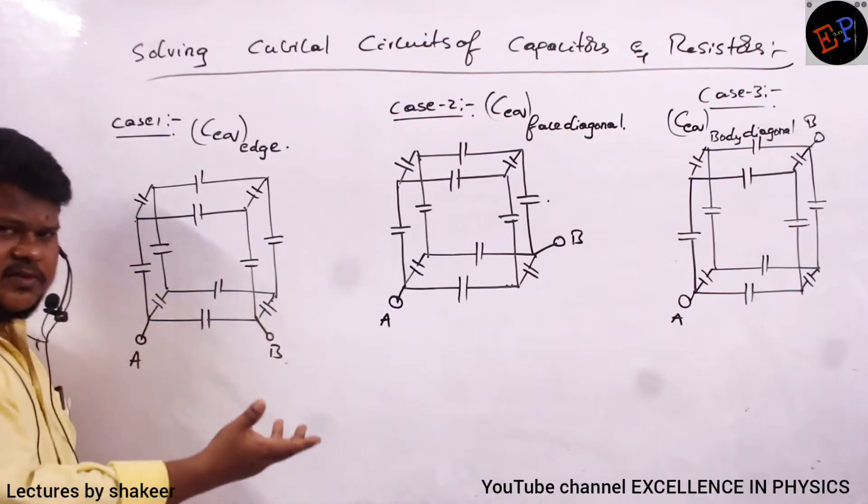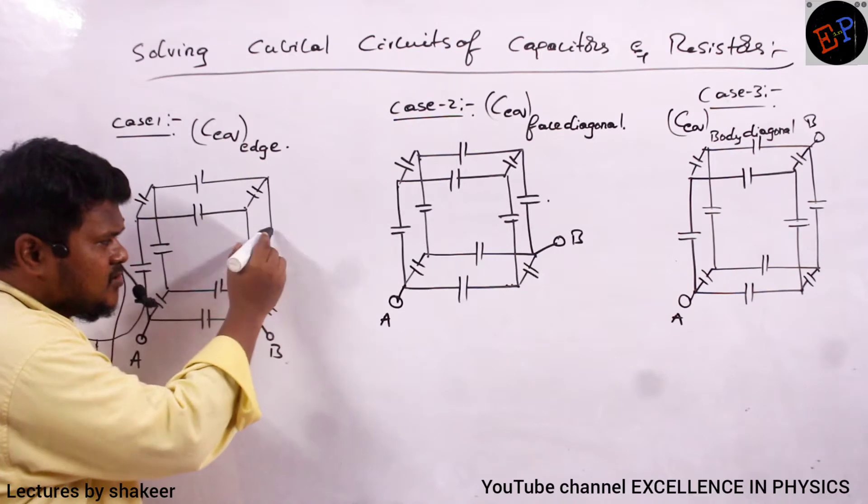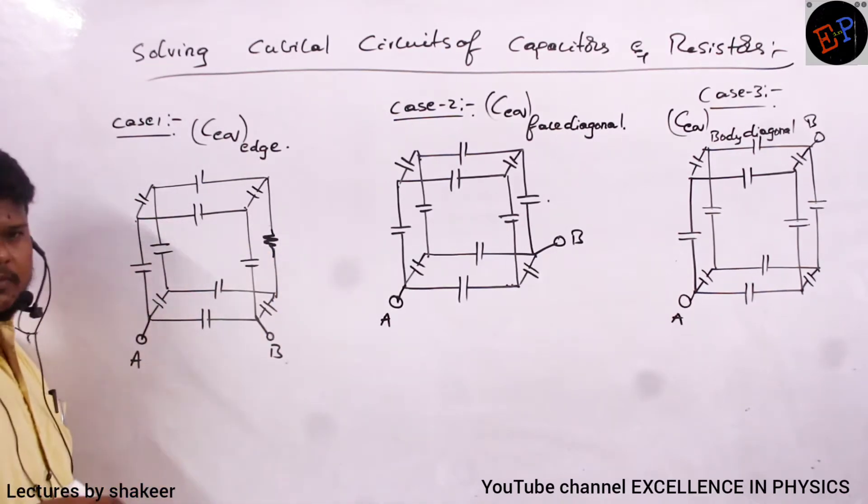Now here we are dealing capacitances. We have written capacitances. Instead of capacitances, resistors also can be given. In current electricity, resistors also can be given.